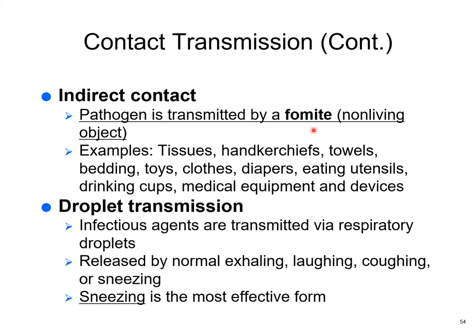Indirect transmission via fomites — non-living objects: tissues, towels (a shared family towel used by dirty hands becomes contaminated), bedding, bed bugs, toys (a major problem in church nurseries and daycares — toys must be sanitized because children put them in their mouths), clothing (don't share it), diapers, eating utensils, and drinking cups. Don't drink after other people. Medical equipment and devices can also be fomites.